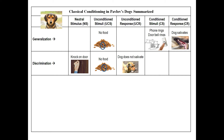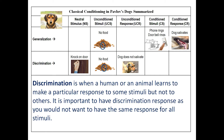Discrimination: if there's a knock on the door and no food is given, the dog doesn't salivate, because the dog knows this sounds nothing like a bell ringing. Discrimination is when a human or an animal learns to make a particular response to some stimuli, but not to others. It's important to have a discrimination response, as you would not want to have the same response for all stimuli.